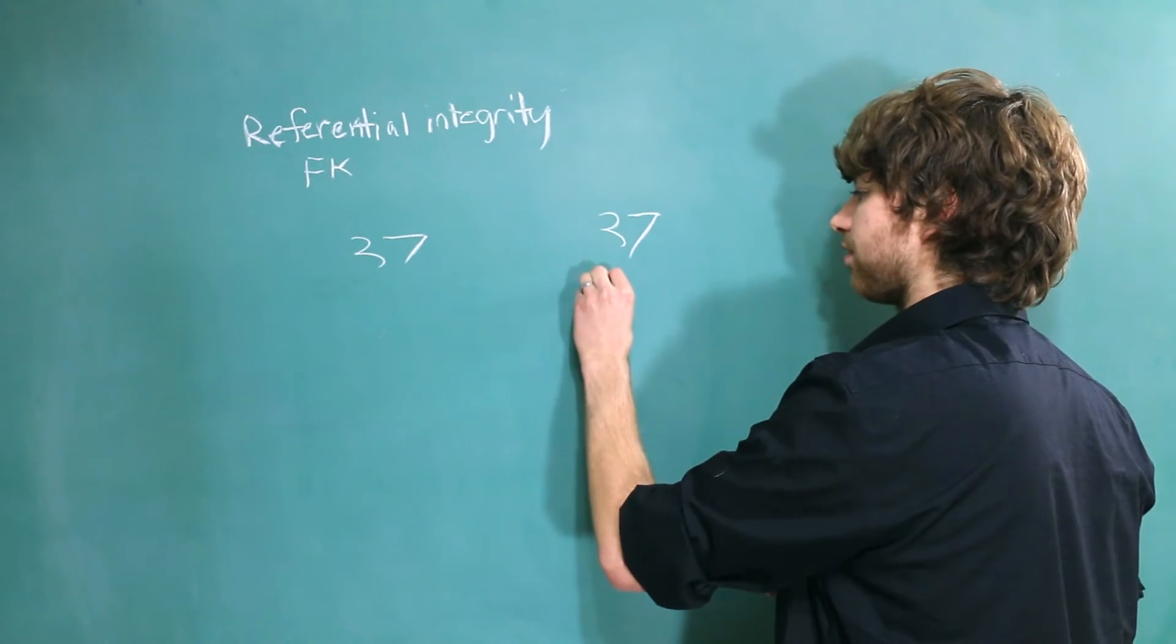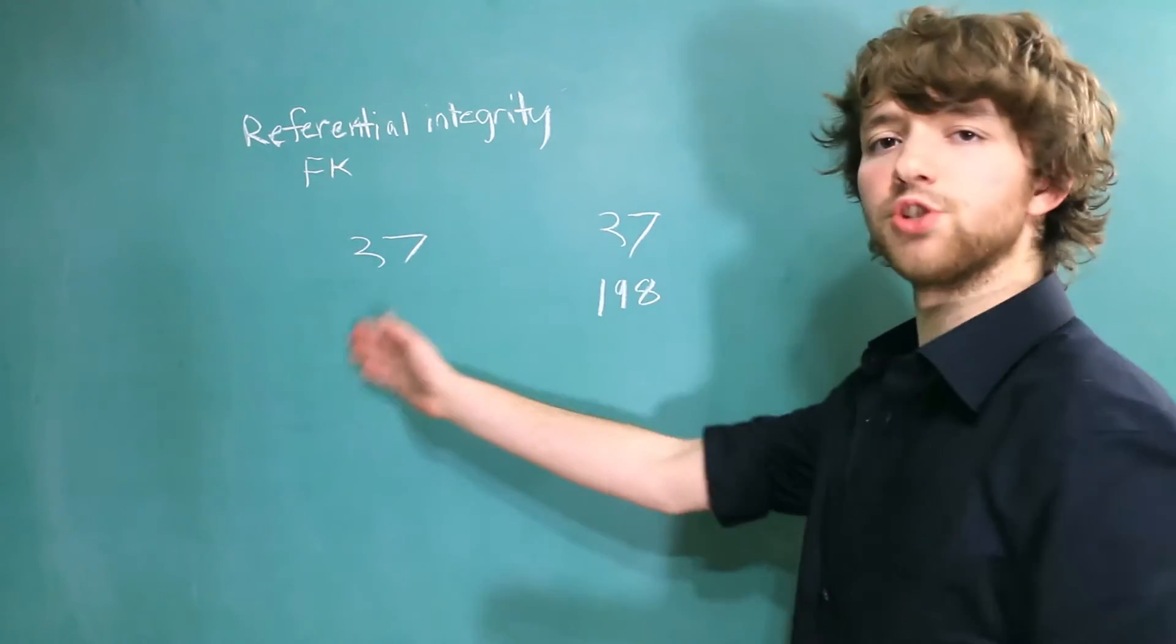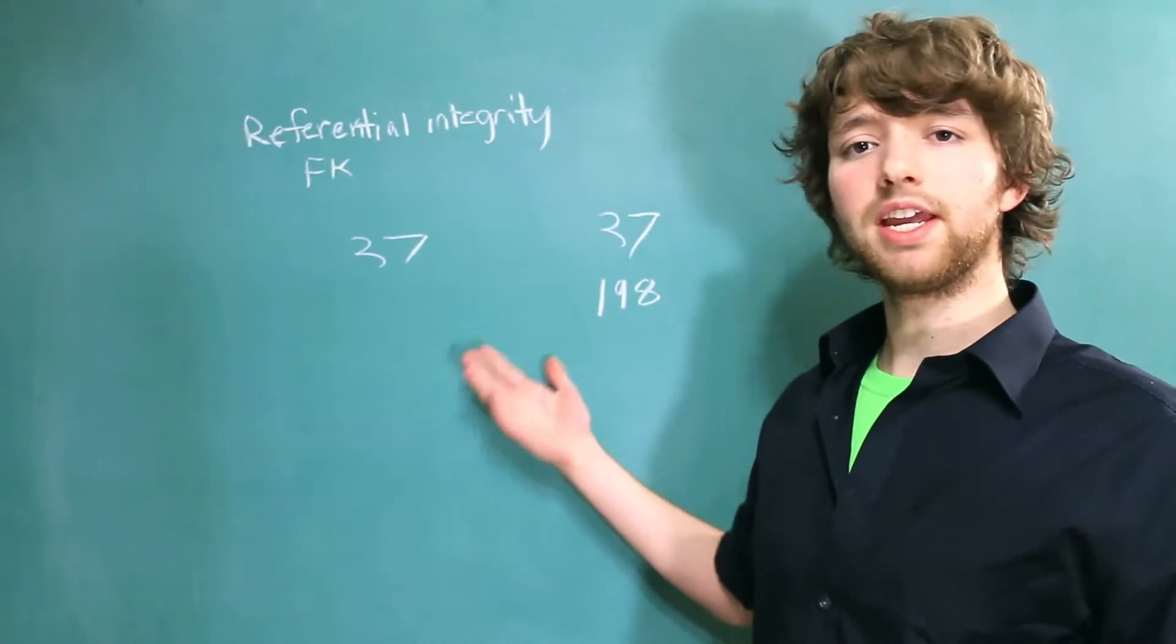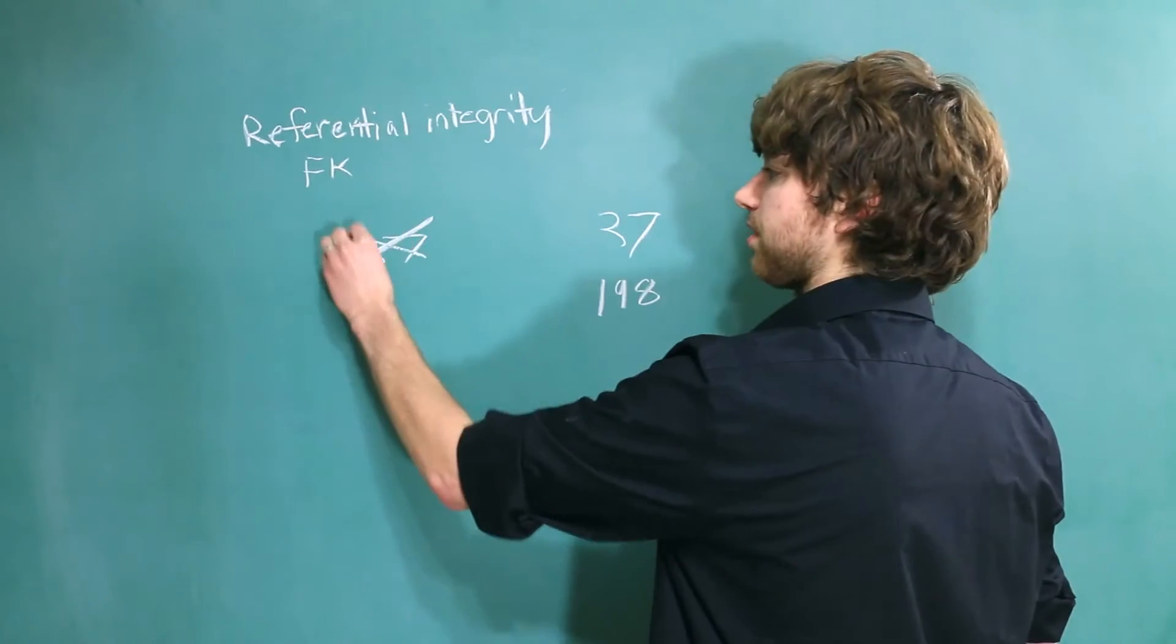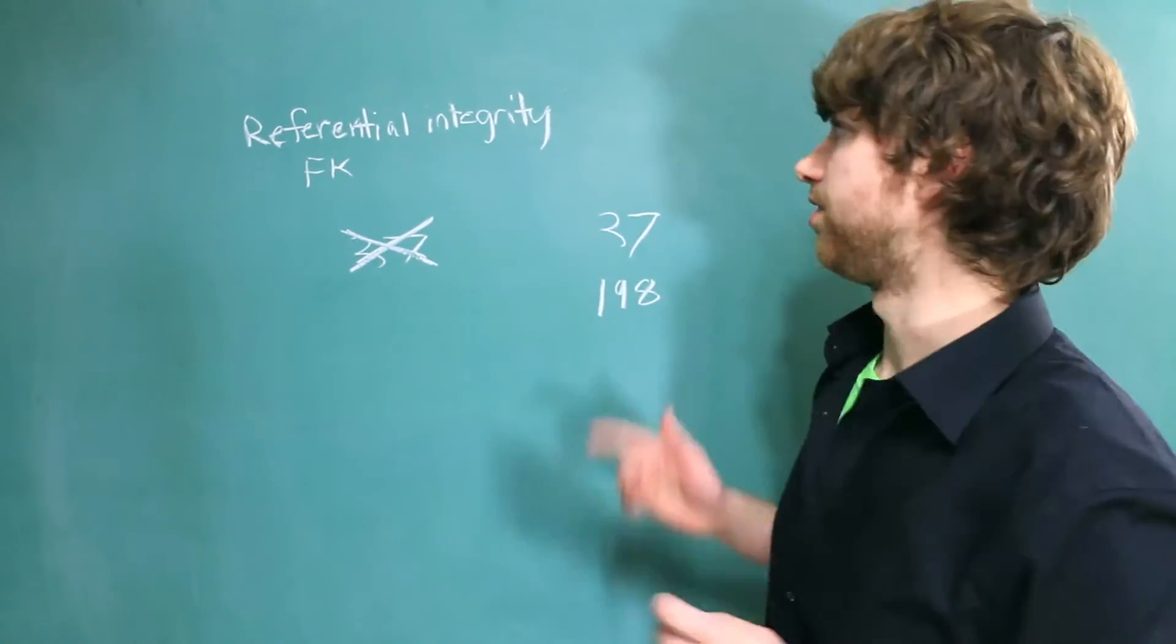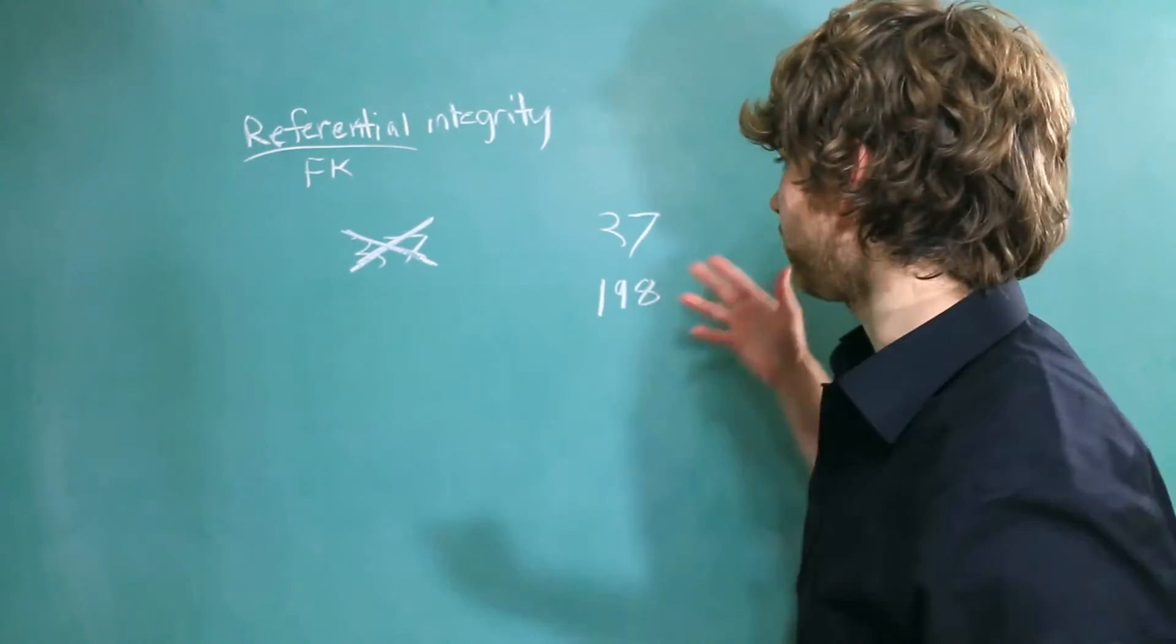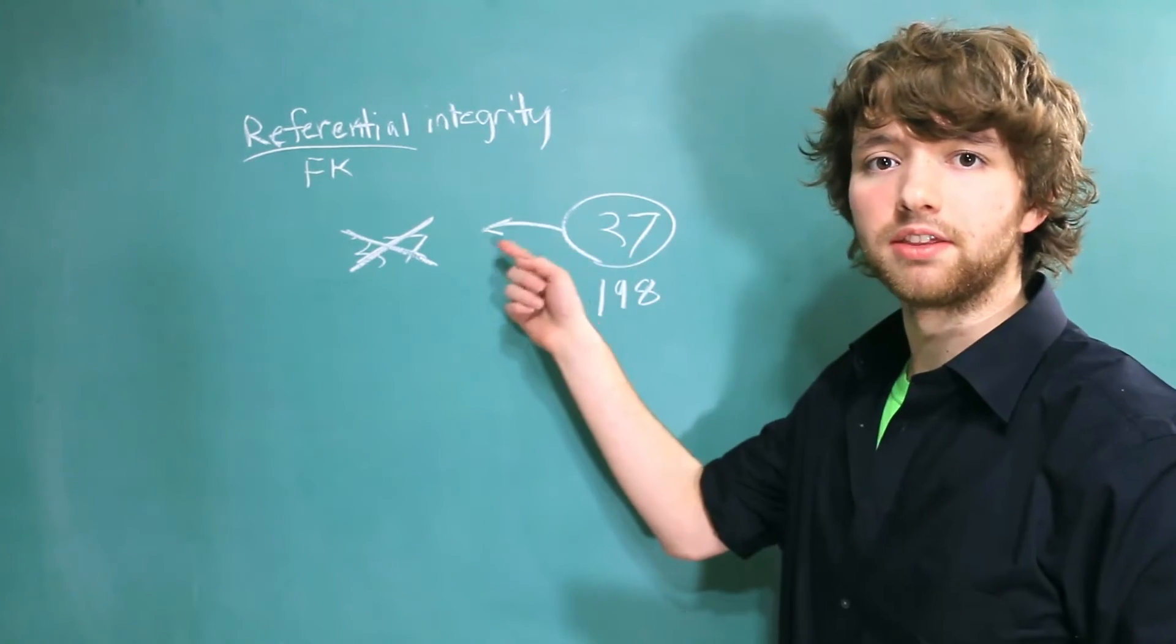So for example, I could make a reference to 198. And even though there's not a 198 over here, that's okay. That's because the database doesn't know any better. To the database, it's just a number. It also means we could just get rid of this row, and the database isn't going to care. This 37 is still going to exist over here. This throws our reference's integrity into question. Because we can have a reference, but we don't know if it actually points to anything.